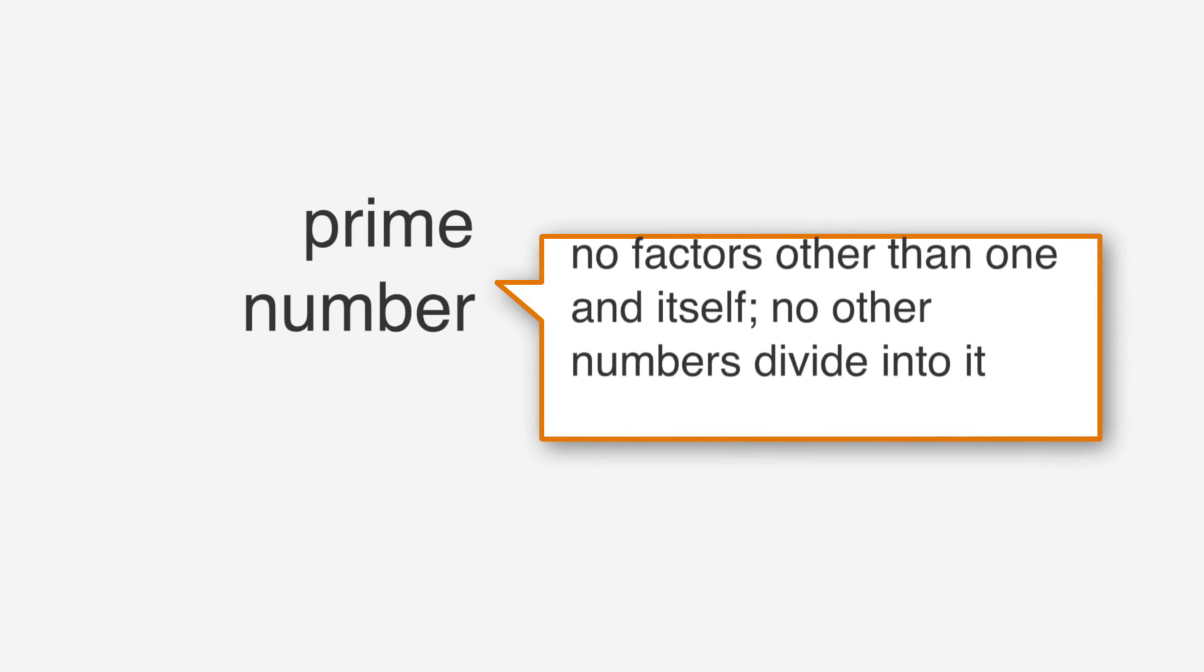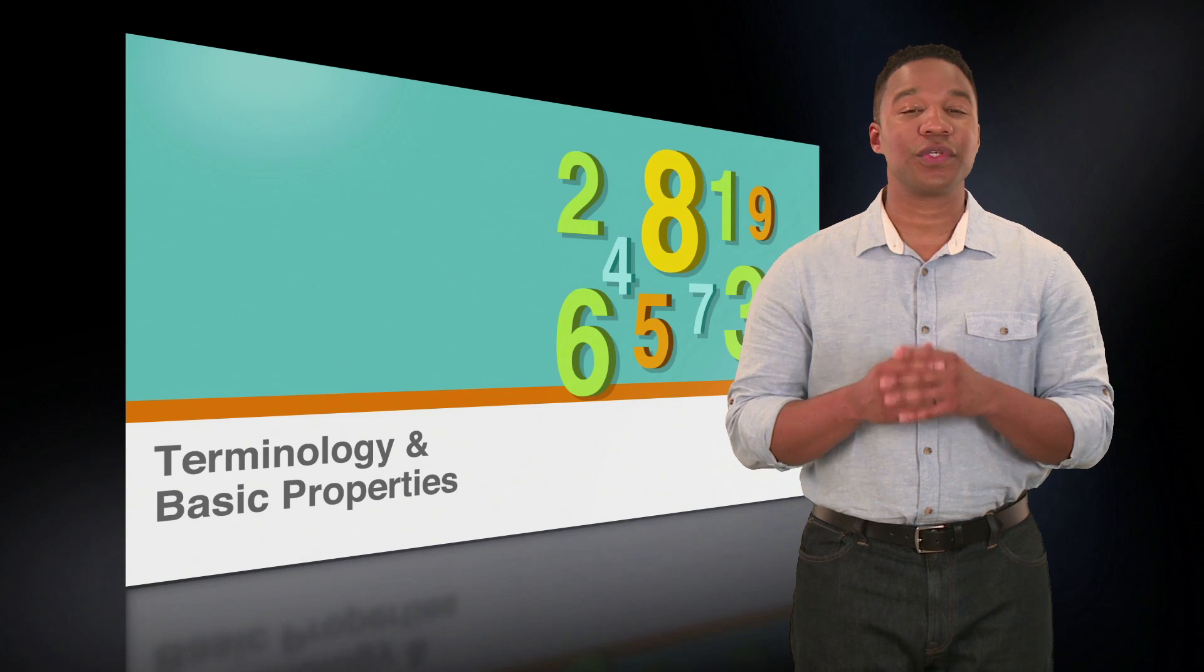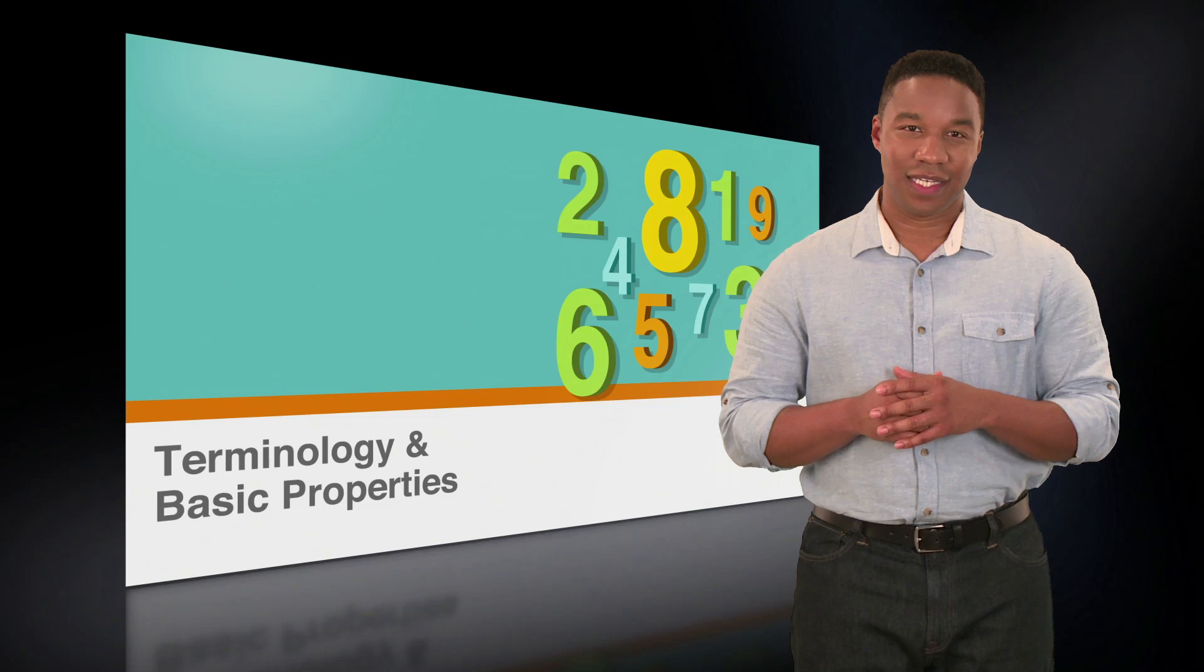The GRE also often includes questions about prime numbers. A prime number is one that has no factors other than 1 and itself. No other numbers divide into it. Some examples are 3, 7, and 19. When we talk about prime numbers, the number 2 deserves some extra attention. 2 is the smallest prime number and is the only even prime number. Since 2 divides into all other even numbers, none of them can be prime.